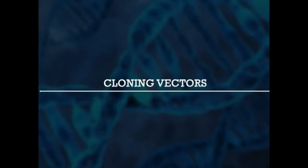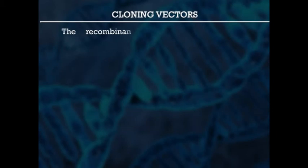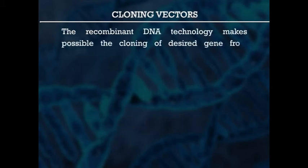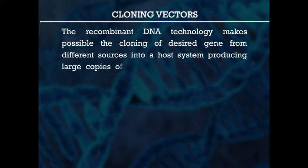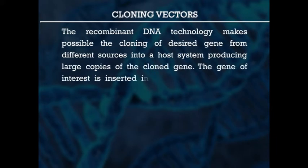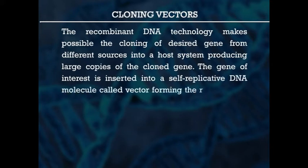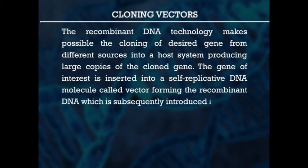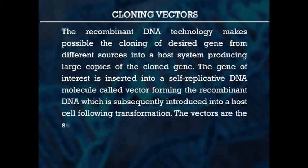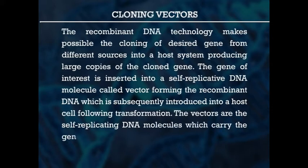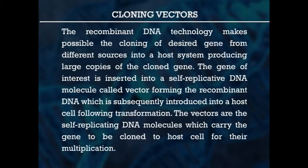Next we will cover cloning vectors. The recombinant DNA technology makes possible the cloning of the desired gene from different sources into a host system, producing large copies of the cloned gene. The gene of interest is inserted into a self-replicating DNA molecule called a vector, forming the recombinant DNA, which is subsequently introduced into a host cell following transformation. Vectors are self-replicating DNA molecules which carry the gene to be cloned to host cells for their multiplication. A good vector should have the ability to replicate autonomously, be less than 10 kb in size, have unique cloning sites for DNA insertion, selectable markers for easy selection, and be able to transform host cells easily.